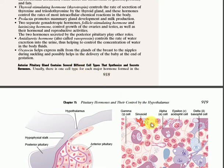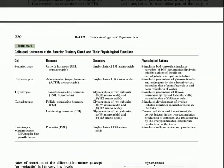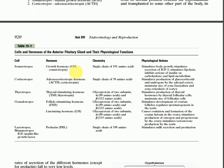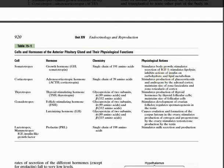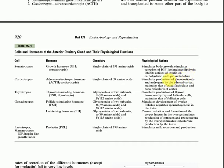The anterior pituitary contains various types of cells, and each cell is modified for secreting a specific type of hormone. This will be discussed with the help of a table. Somatotrophs release the growth hormone, abbreviated as GH or somatotrophin. It is a single chain of 191 amino acids. Its physiological effects include: stimulating body growth, stimulating the secretion of IGF-1 (insulin-like growth factor), stimulating lipolysis (breakdown of lipids), and inhibiting the action of insulin in carbohydrate and lipid metabolism. Insulin is responsible for the storing of glucose into the liver.